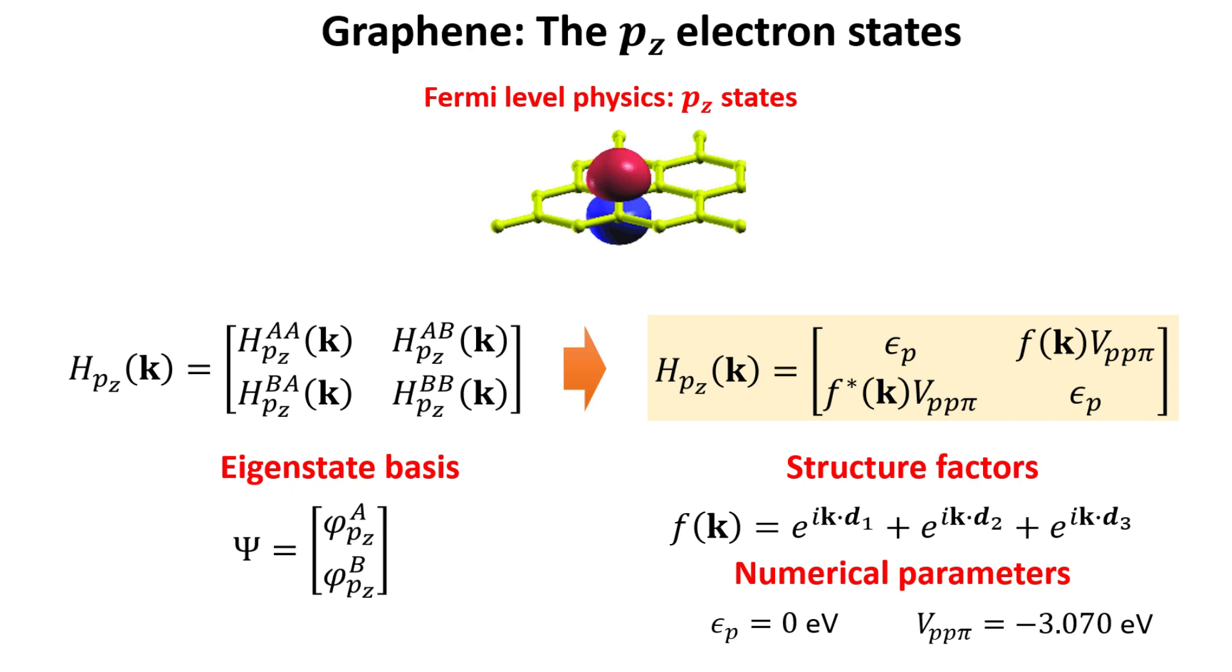The pz Hamiltonian of graphene is highlighted in the yellow box. Note that only the f structure factor plays a role in here. We also provide the Slater-Koster parameters here.